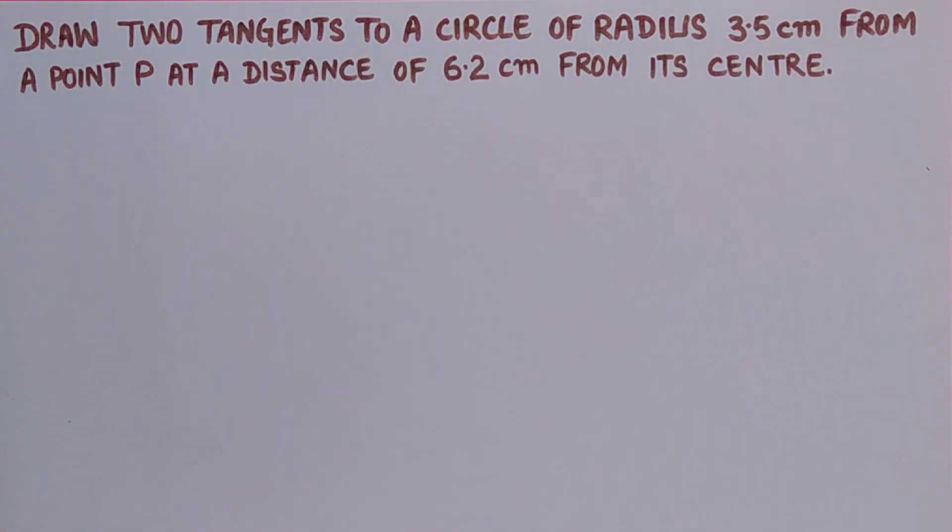Hello everyone, welcome to Math Matters. Let's start with this question: draw two tangents to a circle of radius 3.5 centimeter from a point P at a distance of 6.2 centimeter from its center.